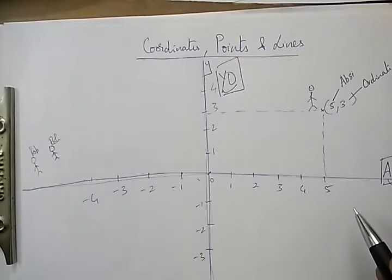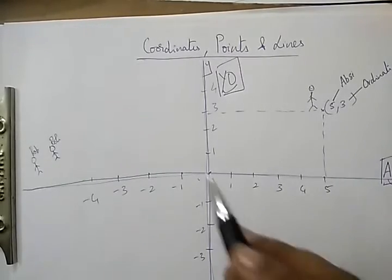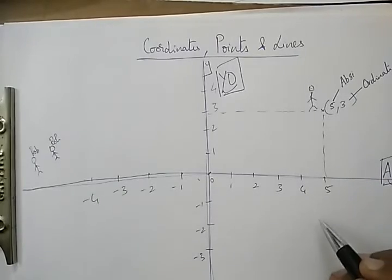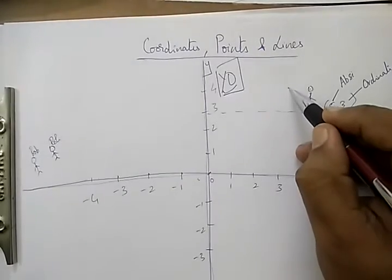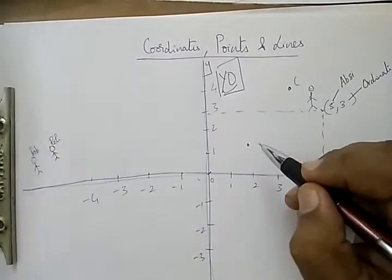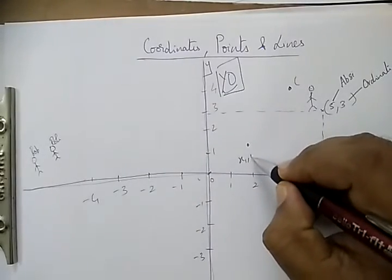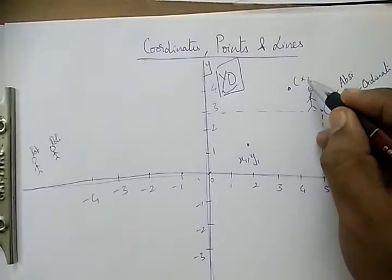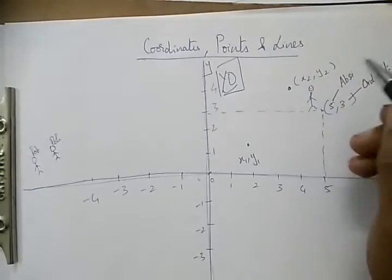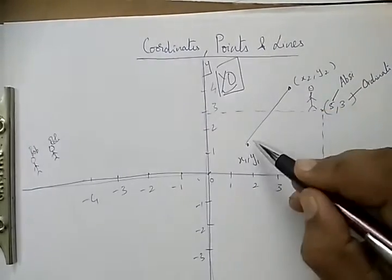So this is basically how coordinates are. Suppose I have a point here and there is another point down below. This is (x₁, y₁) and this is (x₂, y₂). Let me connect these two.